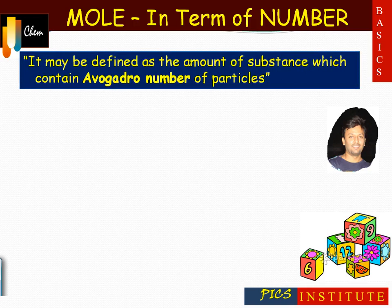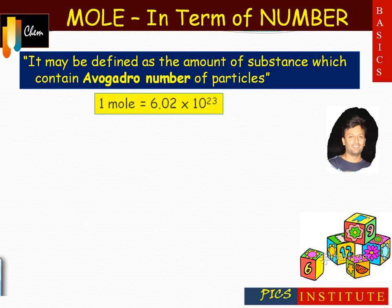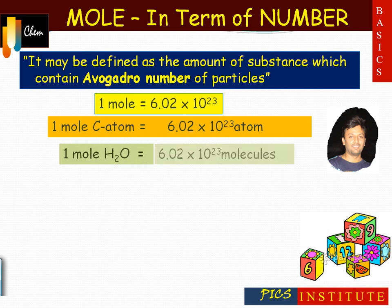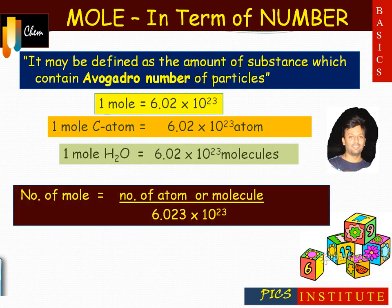In terms of number, the mole may be defined as the amount of a substance which contains Avogadro's number of particles. That is, one mole equals Avogadro's number of particles. For one mole of carbon atoms, the number of atoms is 6.02 × 10²³. For one mole of water, the number of molecules is Avogadro's number. The formula is: number of moles equals number of atoms (or molecules) divided by Avogadro's number.